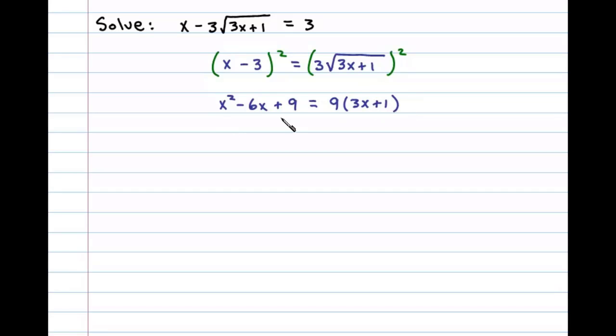At this point we can see we're left with a quadratic, so let's get this in standard form equal to 0. Distributing the 9 here on the right side, we have 27x plus 9, and then subtracting 27x and at the same time subtracting 9, we'll be left with x squared minus 33x equals 0.